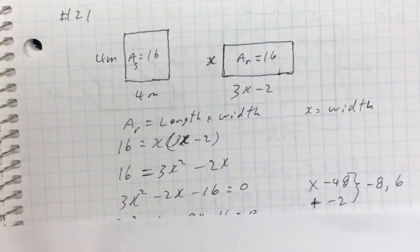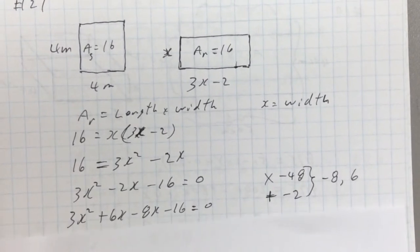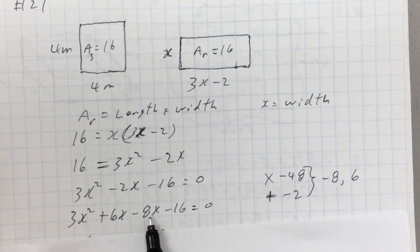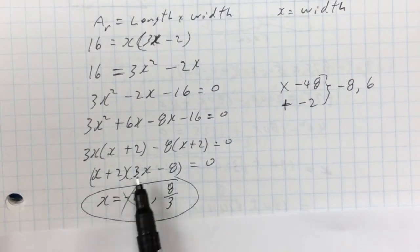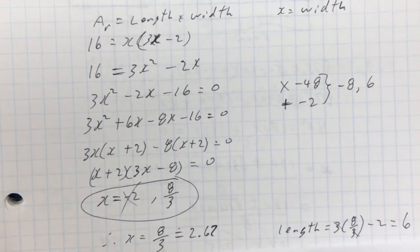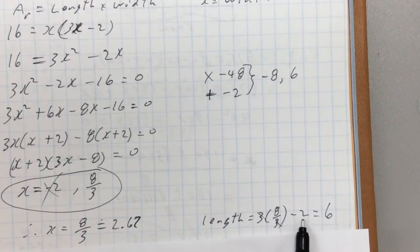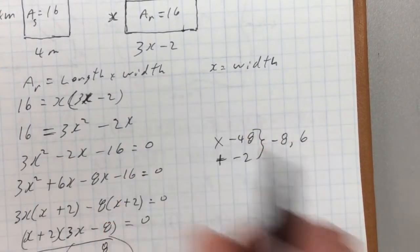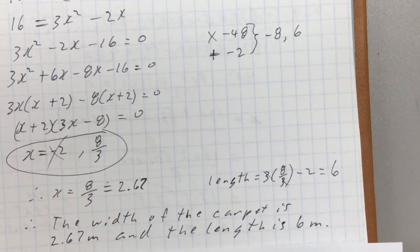Expanding gives the quadratic 3X² − 2X − 16 = 0. Using the product-sum method: product is negative 48 (which is −16 × 3), sum is negative 2. The two numbers are −8 and 6. Decompose the middle term and factor. We get X = −2 or X = 8/3. X can't be −2 because we can't have a negative side length. So X = 8/3, which is approximately 2.67 meters for the width. The length is 3 times (8/3) minus 2, which equals 6 meters.